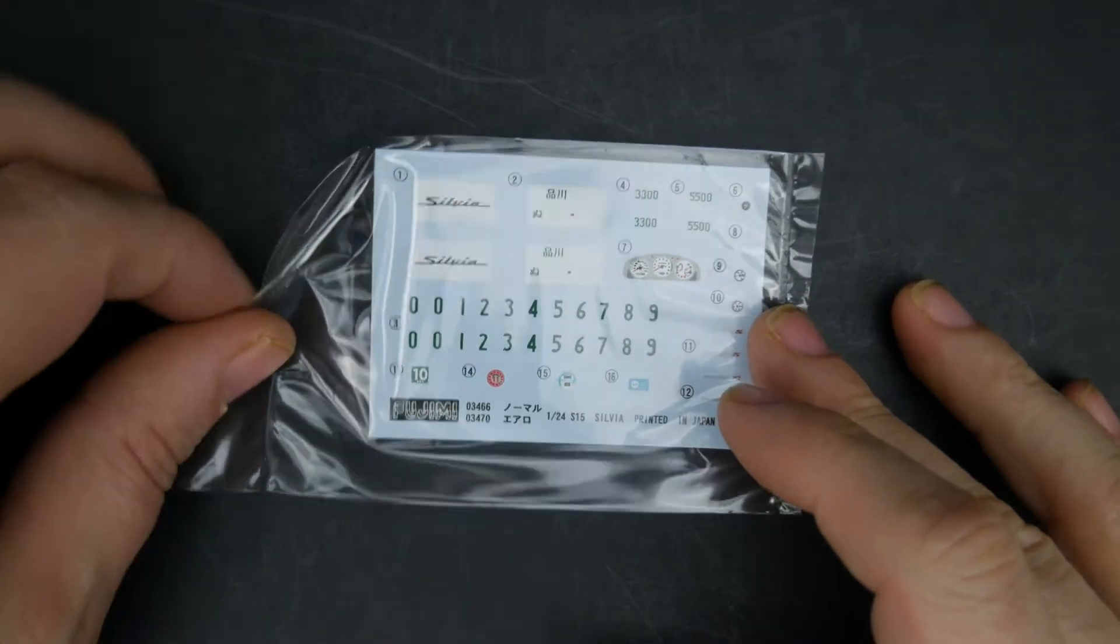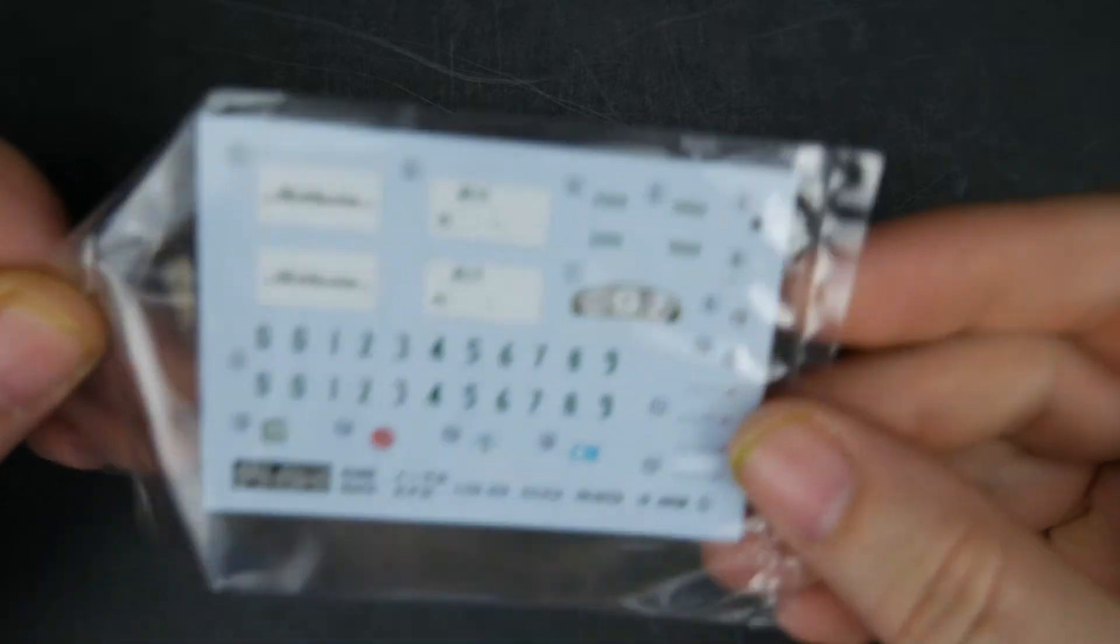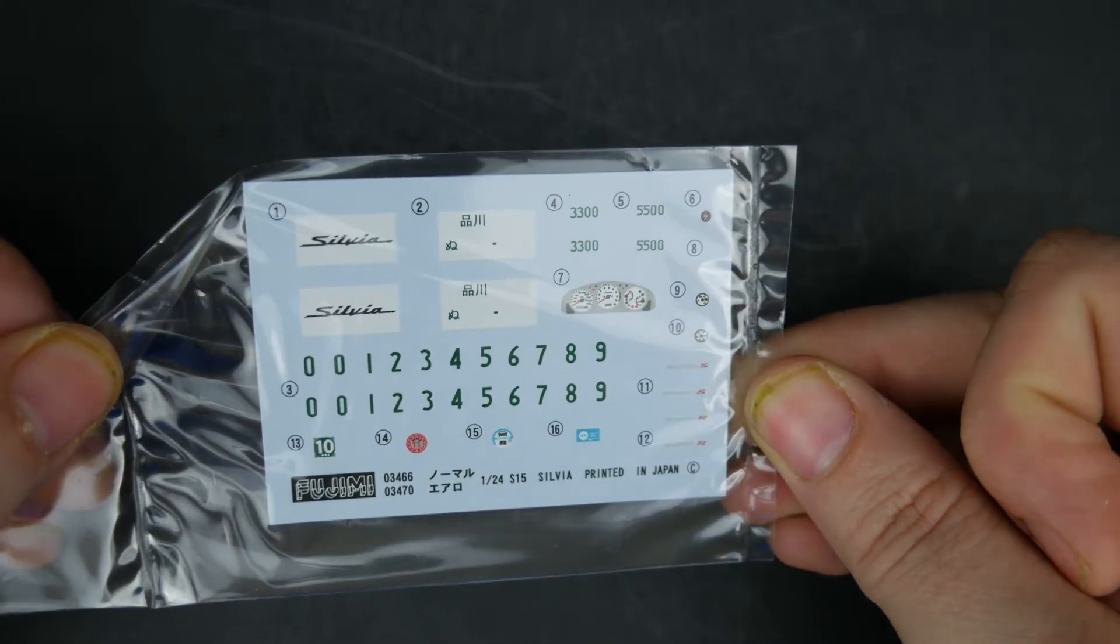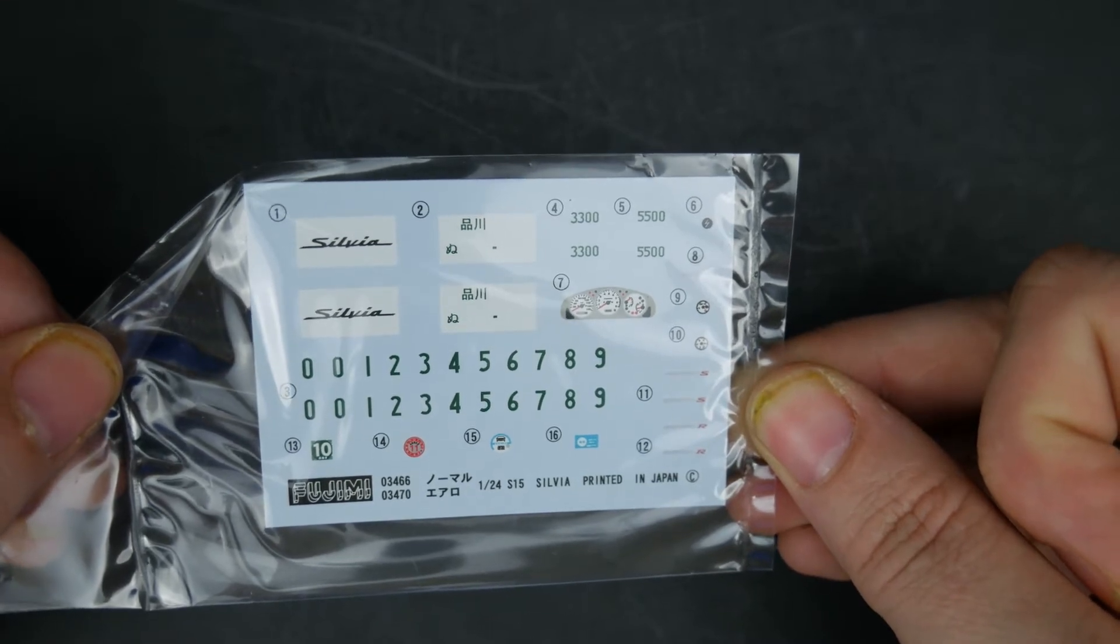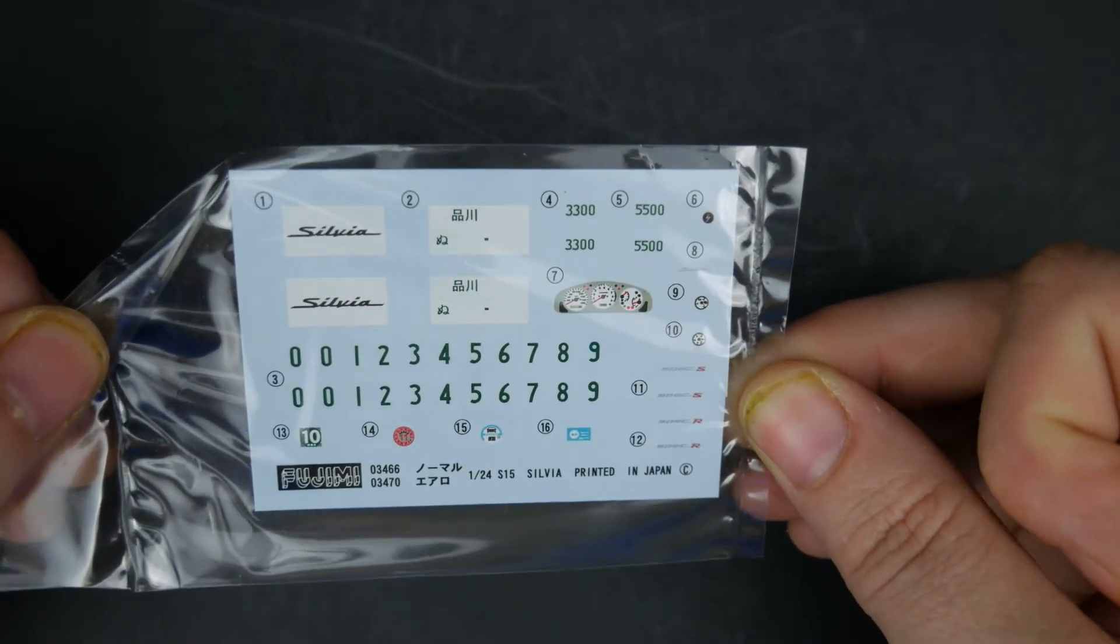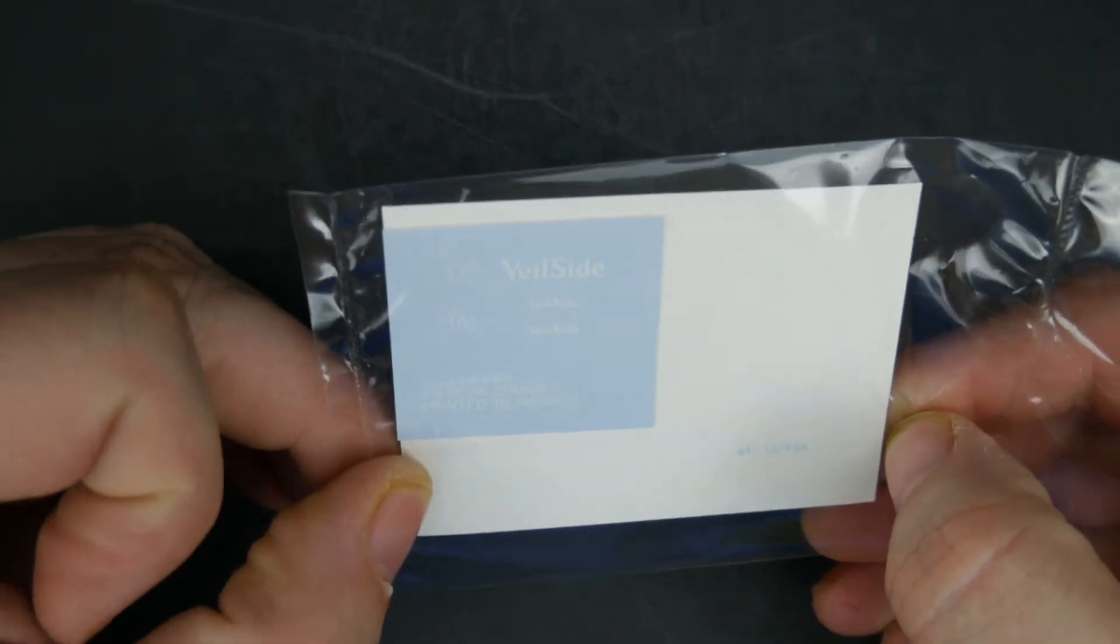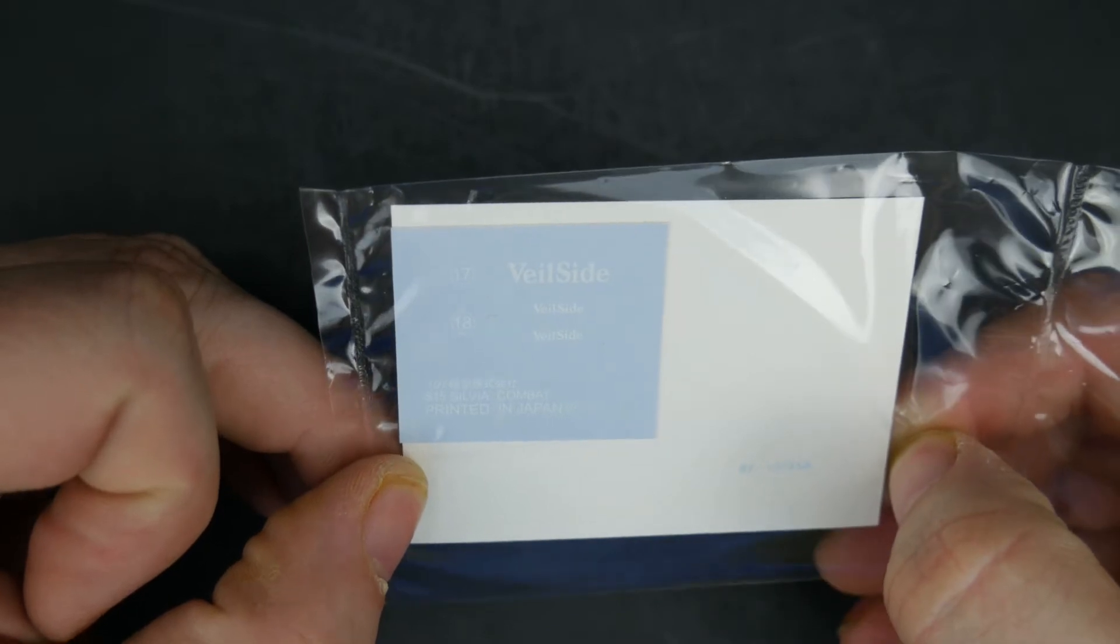And now finally the decal sheet. There are two of them in here, this side first. And the other decal sheet included just has a couple of Veil Side decals.